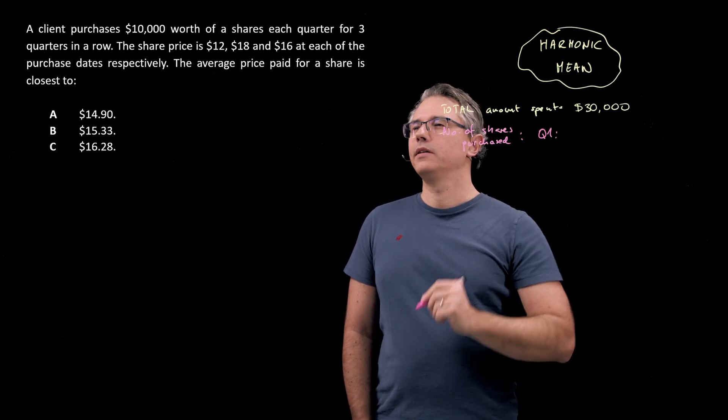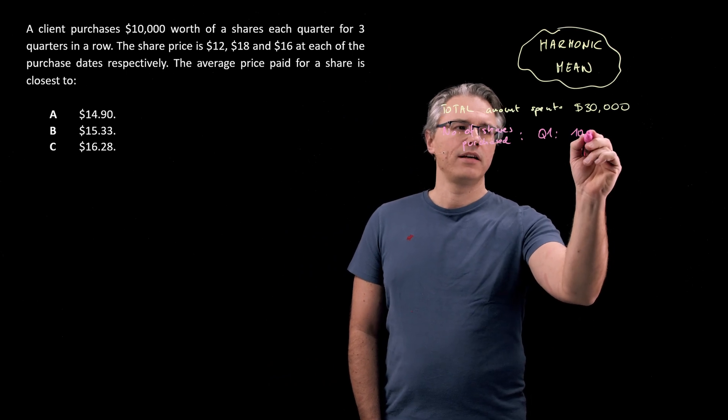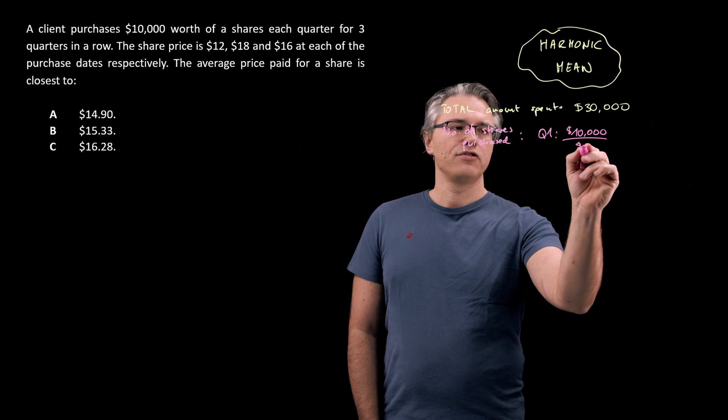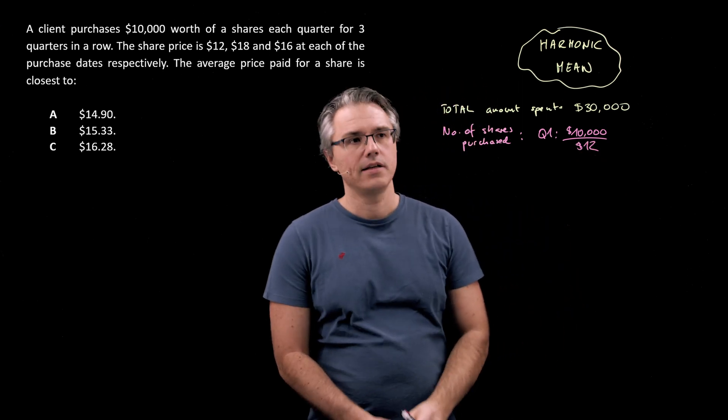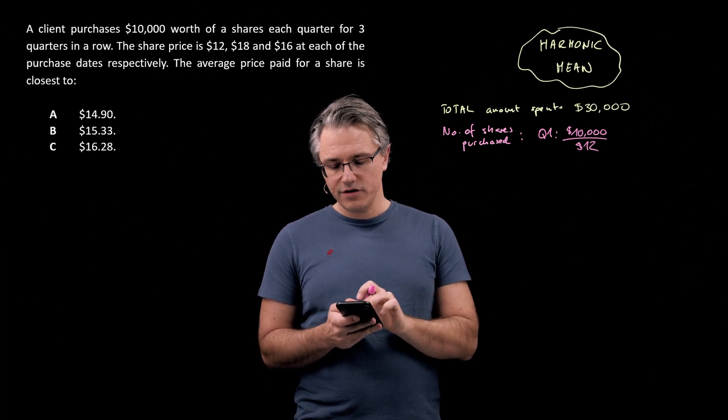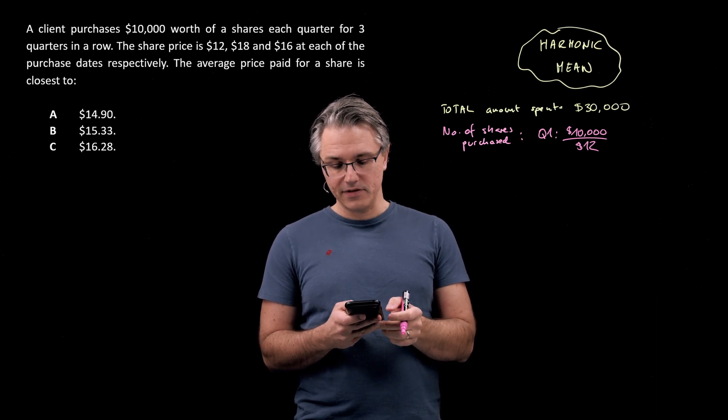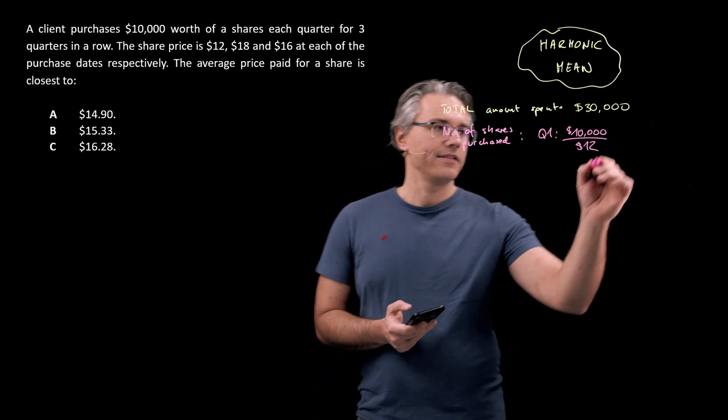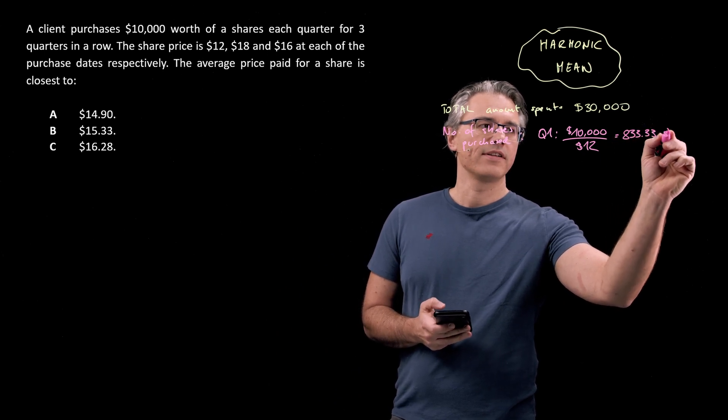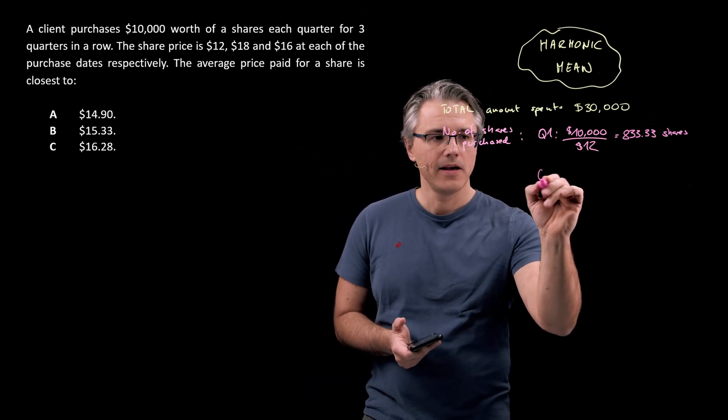This is a little bit more complicated because you'd have to break this down into the relevant quarters. In quarter one, when the share price was $12, we would have the amount of $10,000 divided by the share price of 12. Let's take my calculator and do this. $10,000 divided by 12 gives 833.33 shares. Obviously, I'm assuming you can buy fractional numbers of shares, which is not necessarily the case.